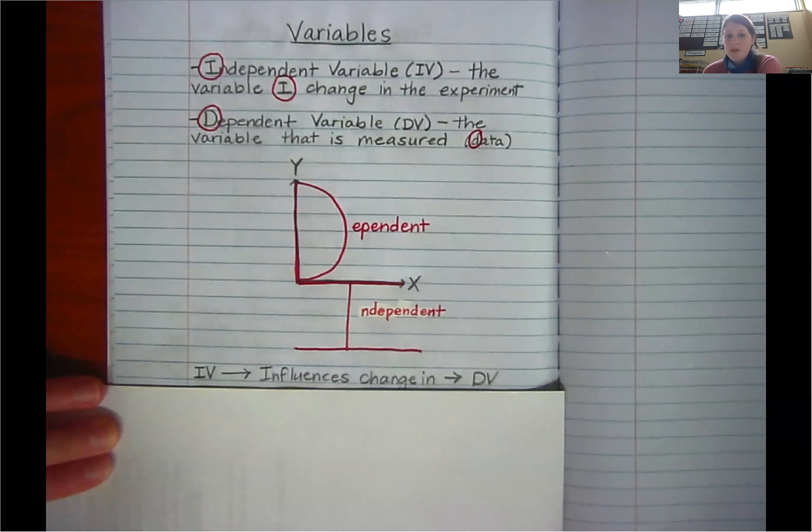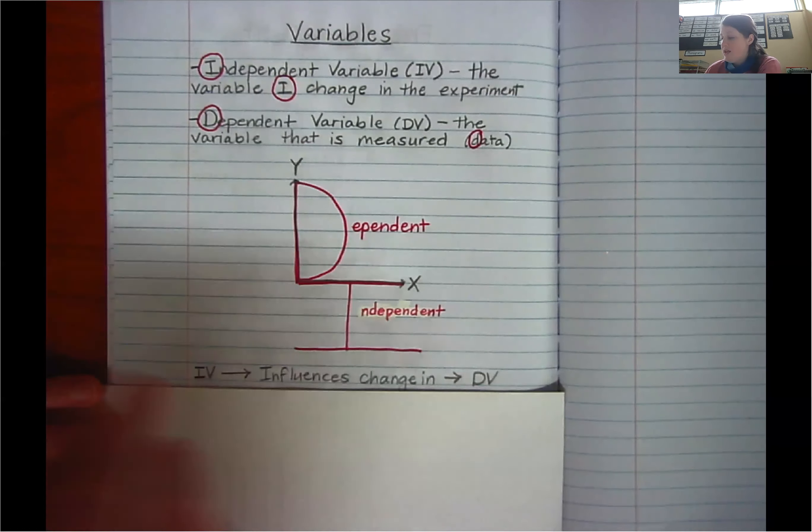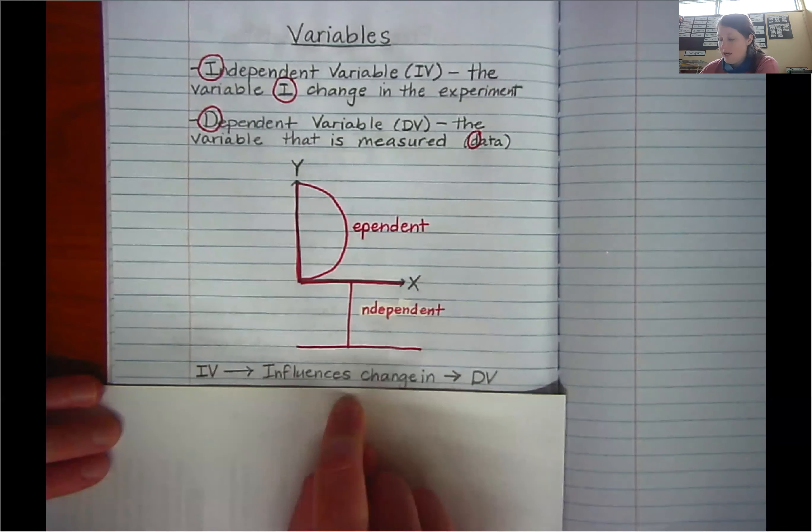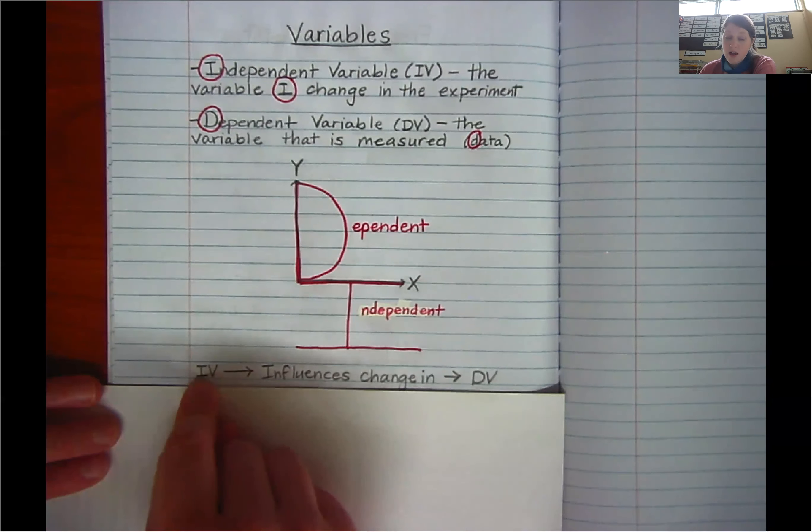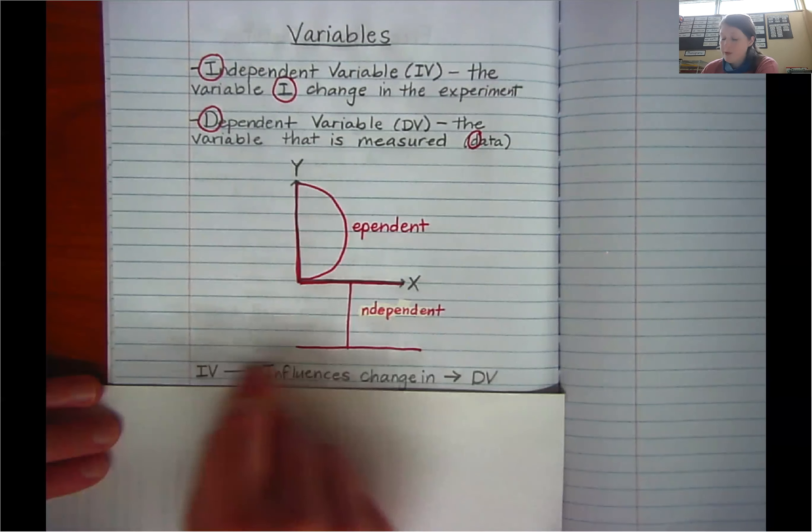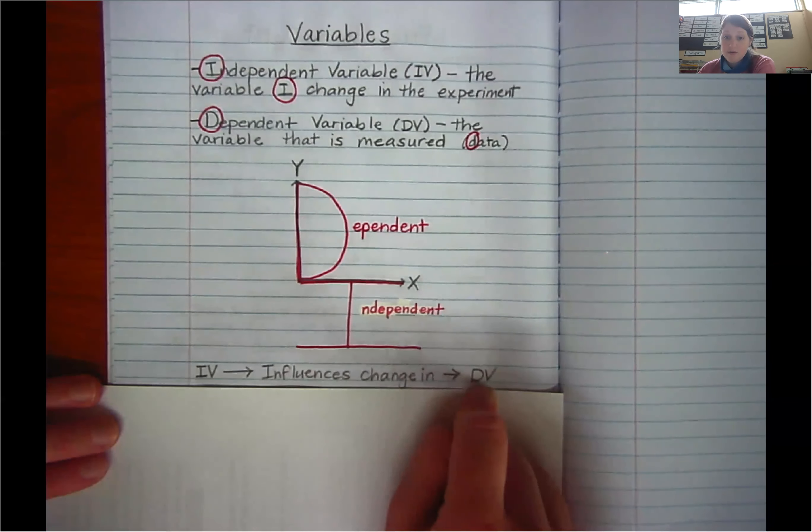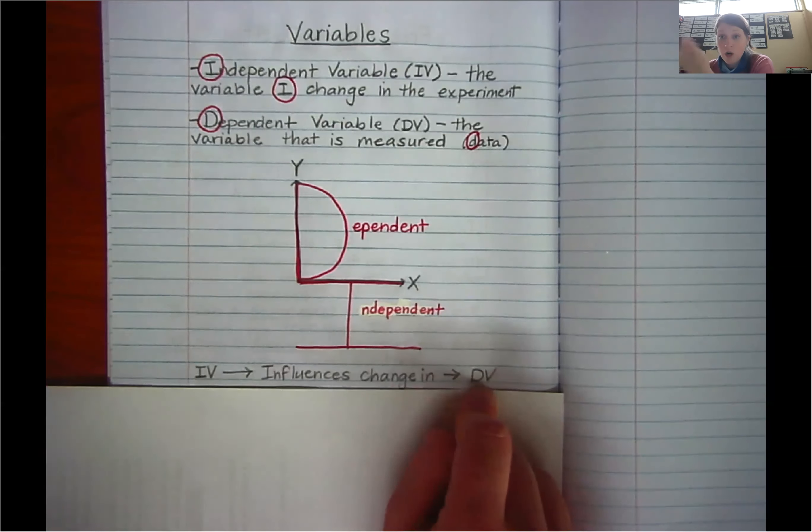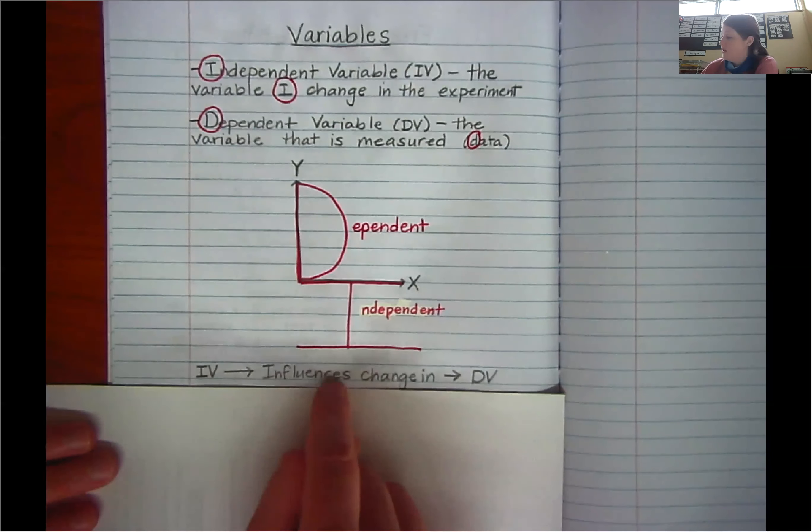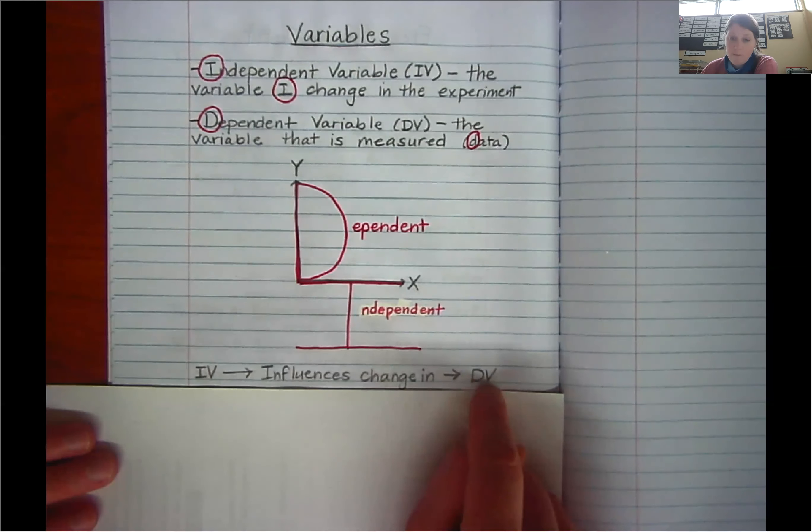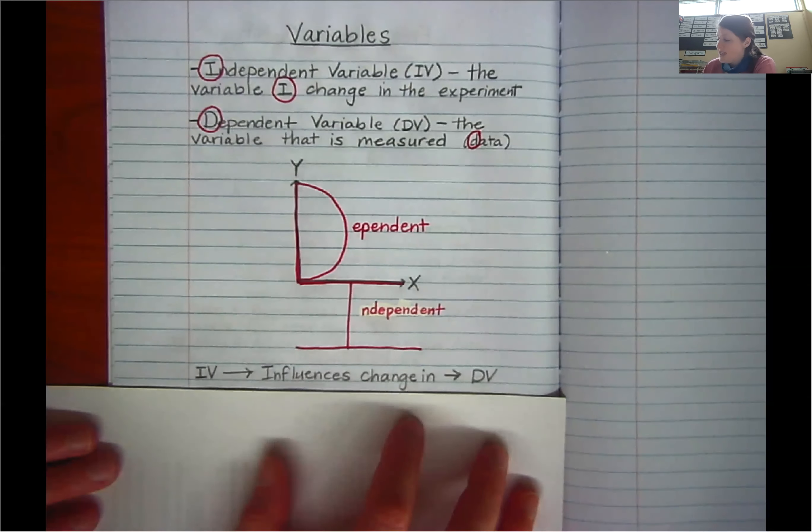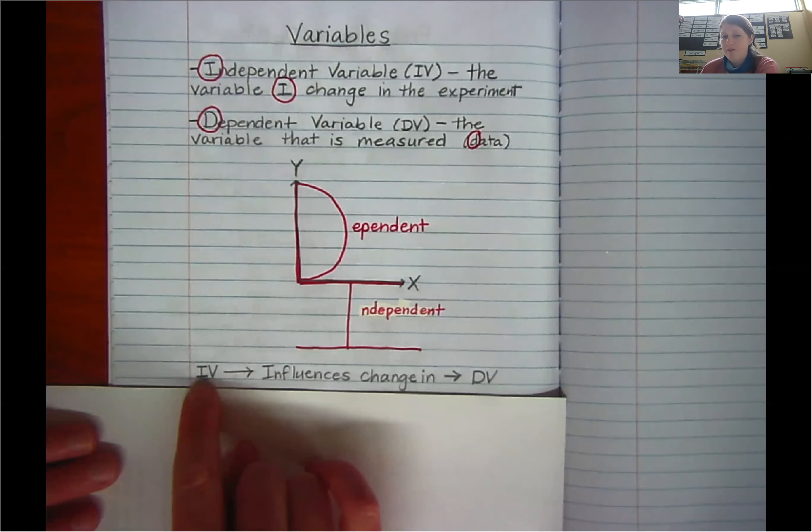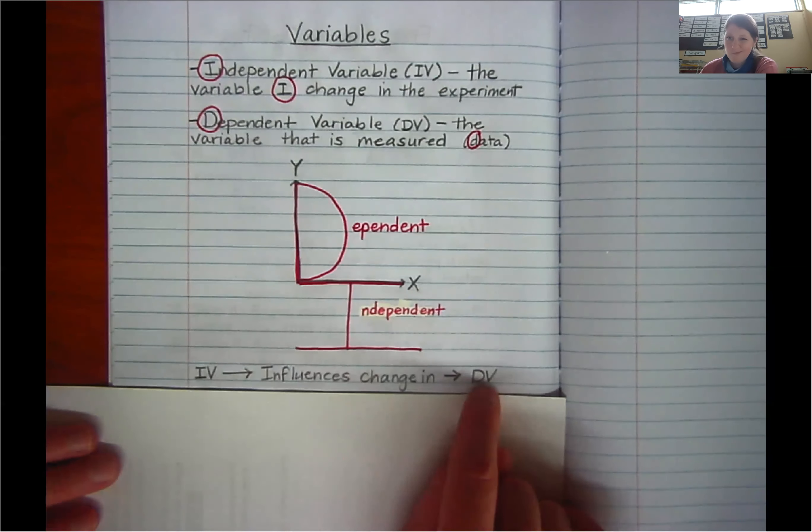I can also remember this if I think about that the independent variable influences change in the dependent variable. So the amounts of energy drink influences change in the plant growth. It might be bad change or it might actually make it worse, but it's still change. So this variable influences this variable. That's how you can remember it as well. I call this kind of like a little machine. I'm going to put my information into this machine and see what pops out the other side. As opposed to you wouldn't say that plant growth influences change in the energy drink. It doesn't really make sense.